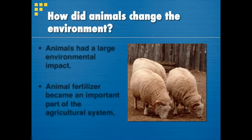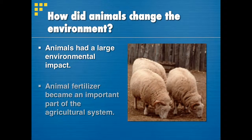The next slide has to do with how these animals changed the environment. They had a very large environmental impact, and even their waste — the fertilizer they created — became an important part of the agricultural system. It was able to recharge the soil and make it constantly available to grow food. A cycle was introduced into the natural system where fertilizer was placed on farmland, the land grew crops, and then the sheep and cattle would eat what was grown, and the cycle would continue.